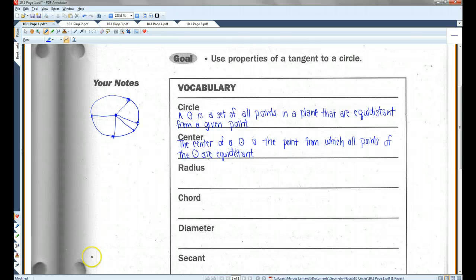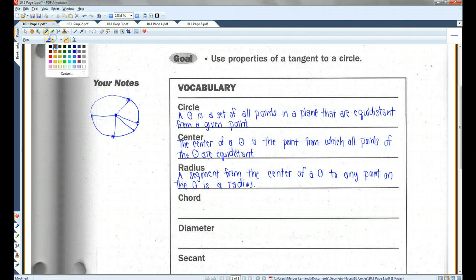Now, a radius, I think all of you guys know what a radius is. A segment from the center of a circle to any point on the circle is a radius. So, like over here, this would be a radius, this would be a radius, all of these shown are radii, anything from the center to the edge is a radius.